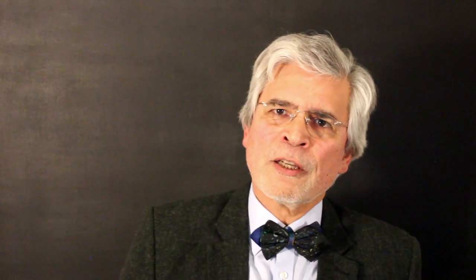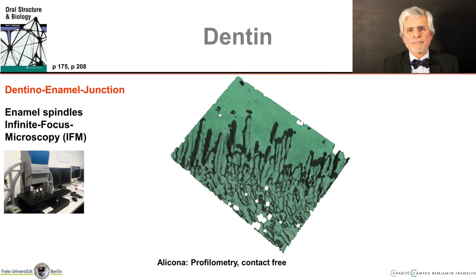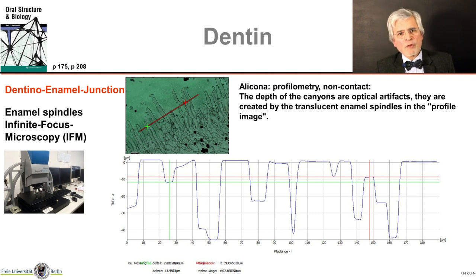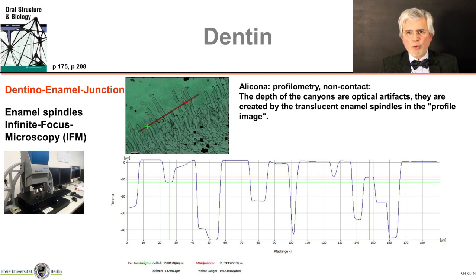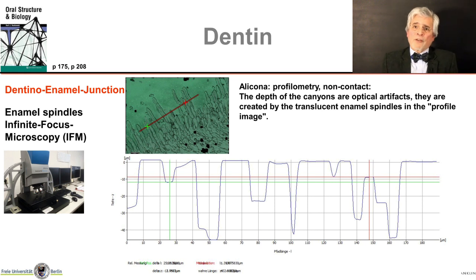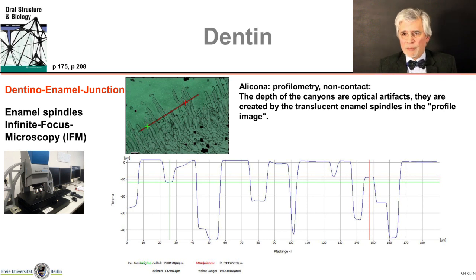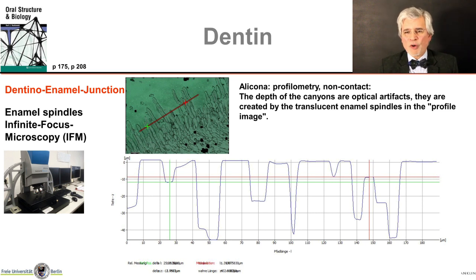We also see this in non-contact profilometry, whereby the graphical representation looks a little more convincing. However, there are artifacts here. The red line in the green image shows the path of the survey — the real profile line — but the depth of the canyons are optical artifacts created by the translucency of the enamel spindles in the profile image. At least, we now know something about the order of magnitude: 10 micrometers — that's about right.